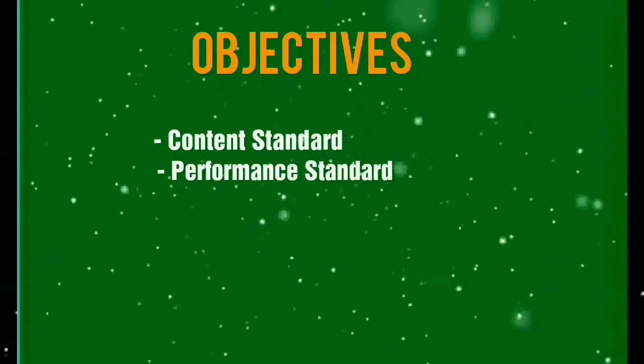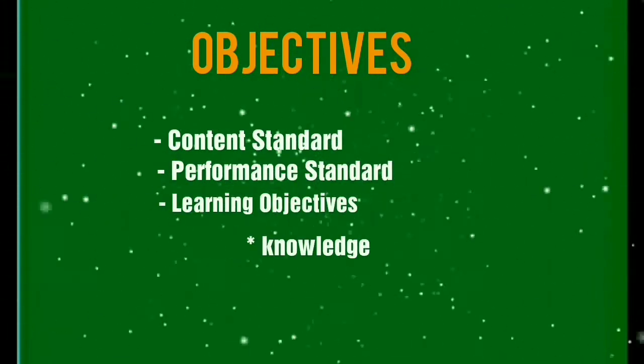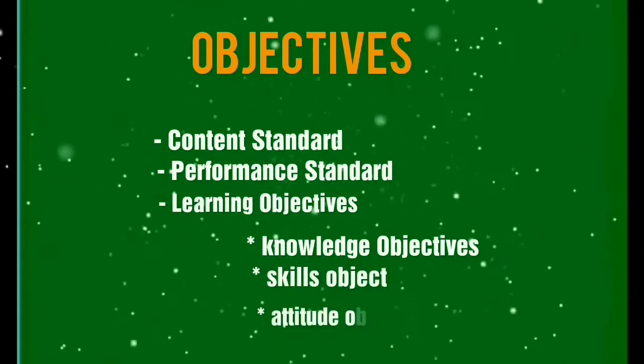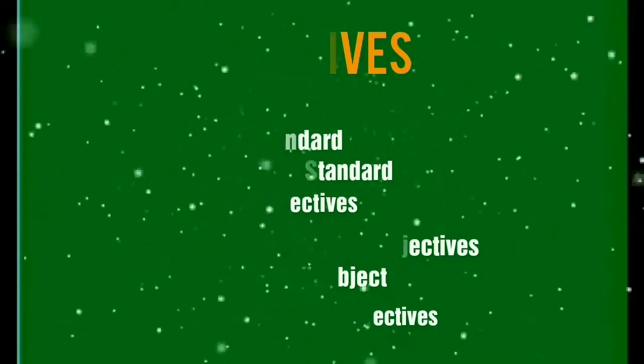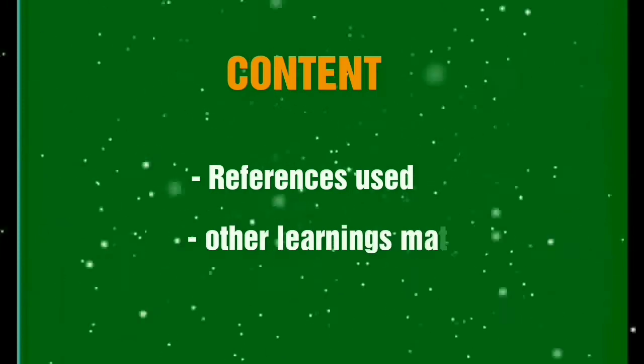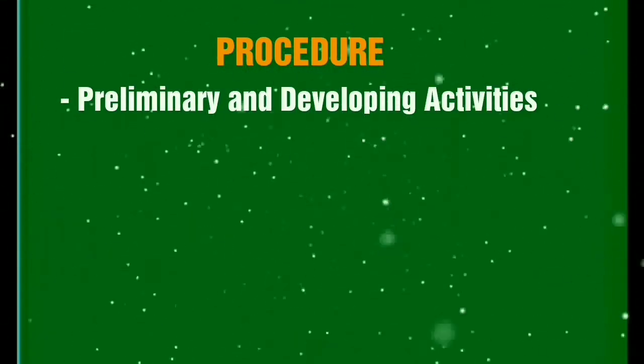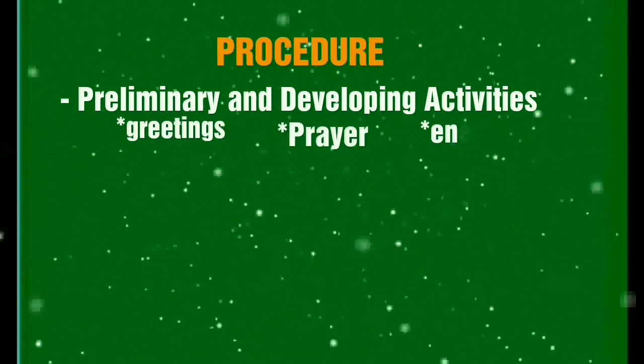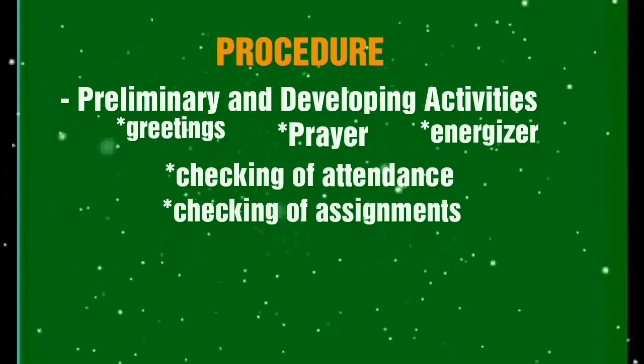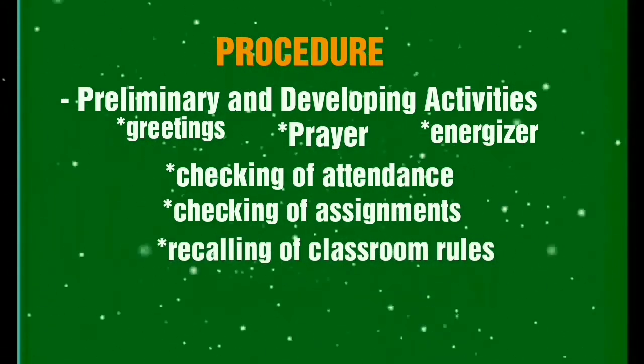In a 5E lesson plan, you have first the objectives, which include the content standard, performance standard, and learning objectives — which cover knowledge objectives, skills objectives, and attitude objectives. Second is content, which includes the references and learning materials used in the lesson. Next is the procedure: preliminary and developing activities include greetings, prayers, energizer, checking of attendance, checking of assignment, recalling classroom rules, and the drill or review.